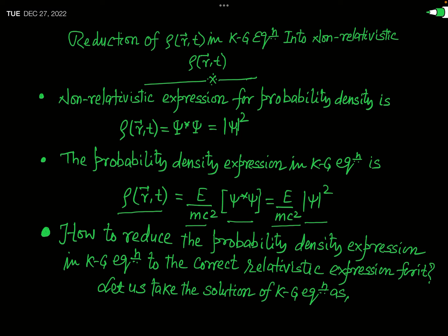In contrast, when we find the probability density from the non-relativistic Schrödinger time-dependent equation, it is simply ψ*ψ = |ψ|², which is always positive and real. So the aim of this lecture is to discuss how this unphysical result for the probability density from the KG equation can be reduced to the valid expression obtained in the non-relativistic case.